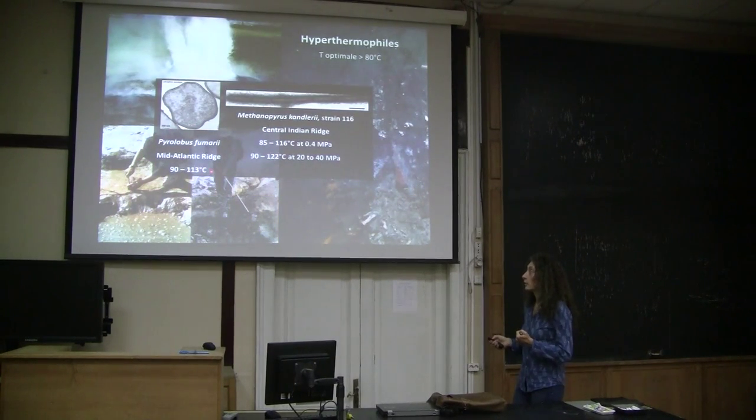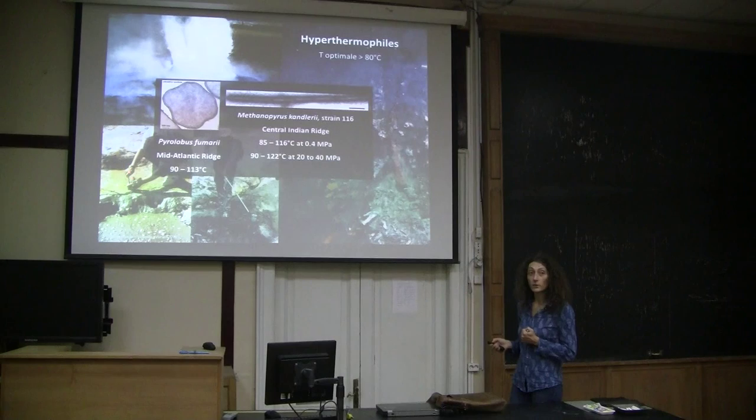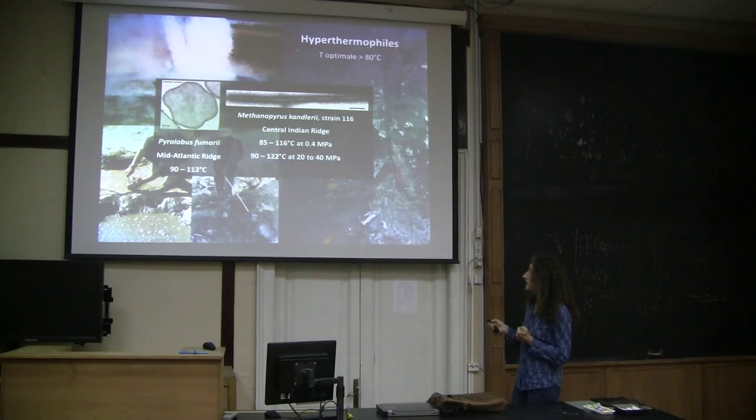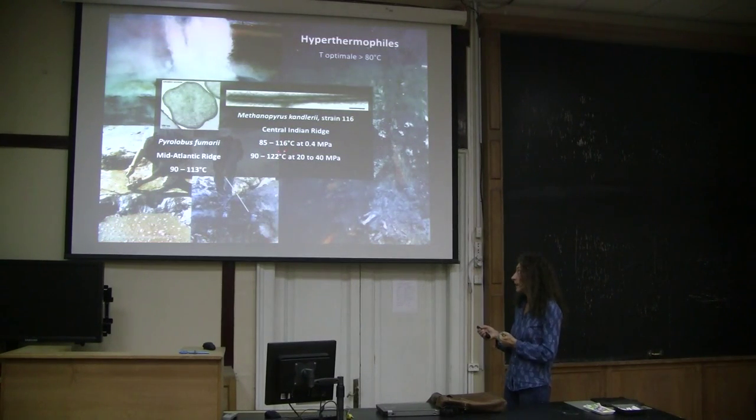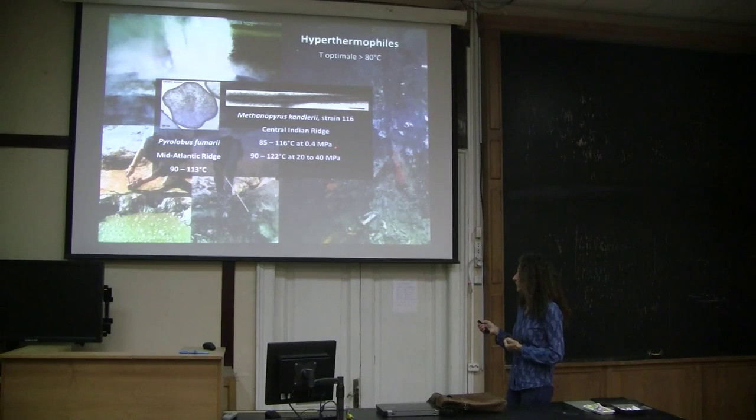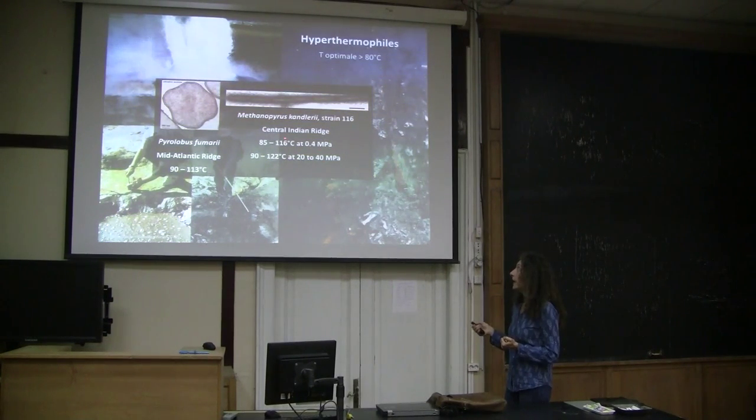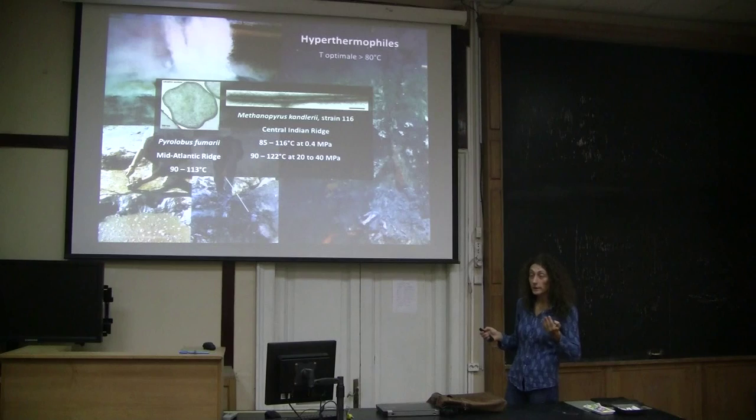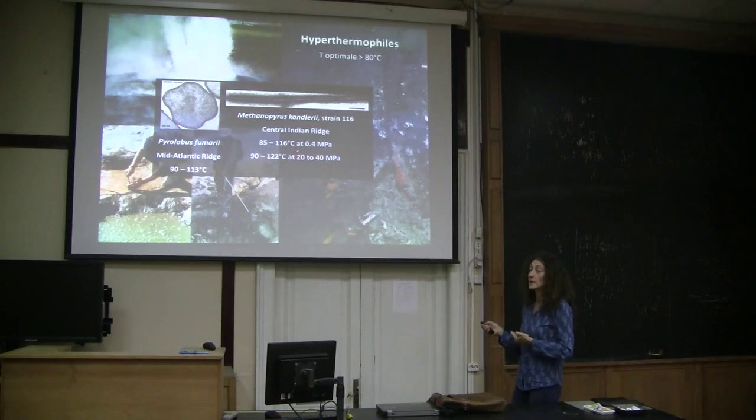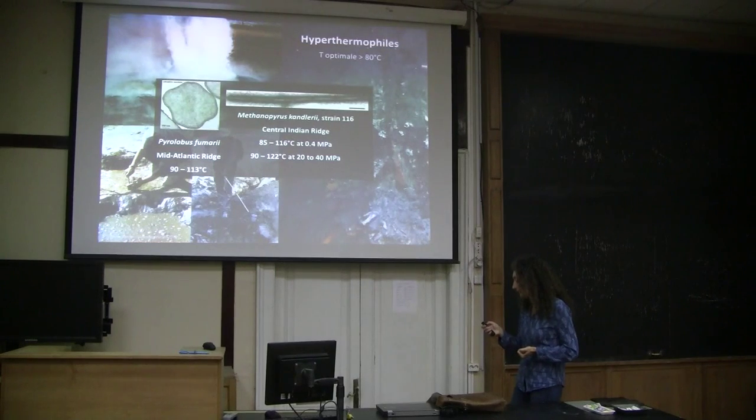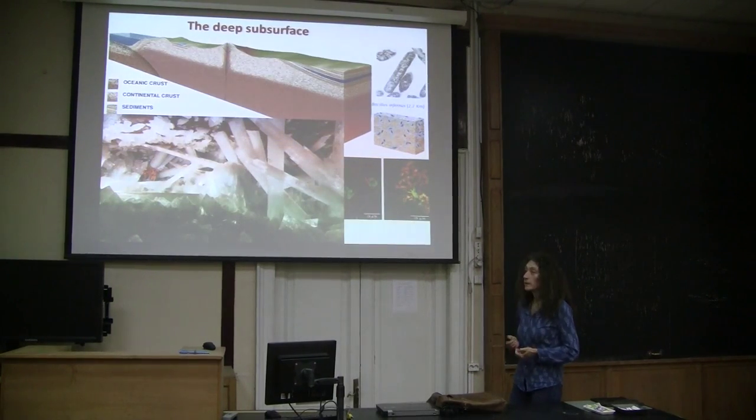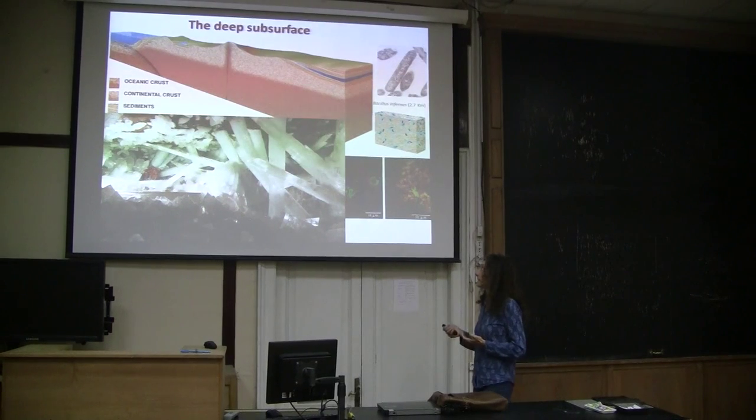So the records of hyperthermophiles today are held by archaea, this prokaryotic lineage, and belong to these two organisms: Pyrolobus fumarii, growing between 90 and 113 degrees, and Methanopyrus kandleri, this particular strain growing up to 116 degrees in the lab at atmospheric pressure, and up to 122 degrees at the pressure that is typical of its natural habitat.